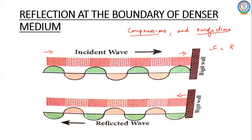This rigid wall is a denser medium. In a denser medium, the particles are held very tightly, so the opposite reaction force is as strong as the compression force. Because it is a denser medium, the compression goes and hits the rigid wall, and the wall exerts an equal and opposite force, resulting once again in a compression traveling in the opposite direction.